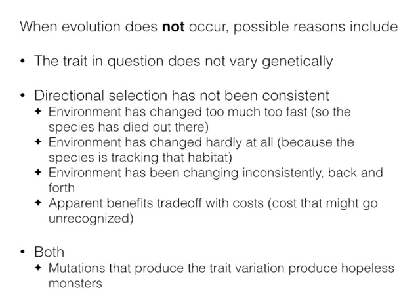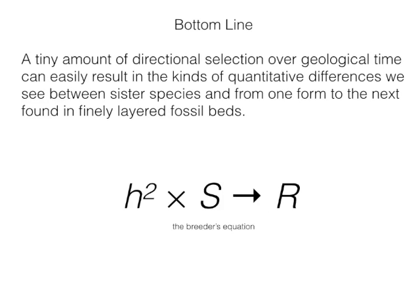There's also the possibility of apparent benefits that trade off with hidden costs. If giraffes had necks twice as long, perhaps they simply couldn't get enough oxygen to their lungs. These cost-benefit trade-offs keep things from evolving to extremes. The bottom line: a tiny amount of directional selection over geological time can easily result in the kinds of quantitative differences we see between sister species and in finely layered fossil beds. Evolution is ridiculously easy to account for.